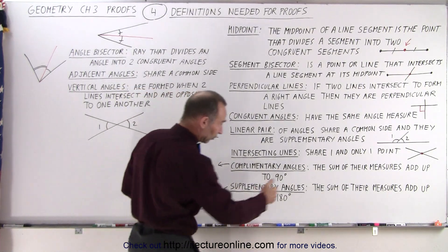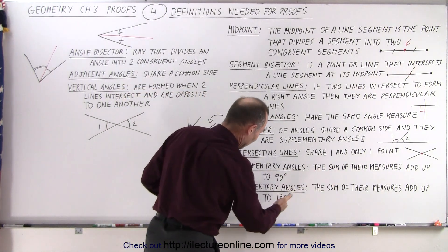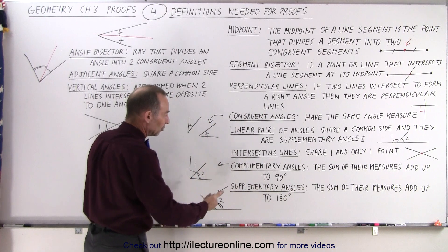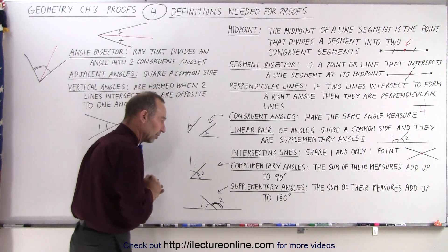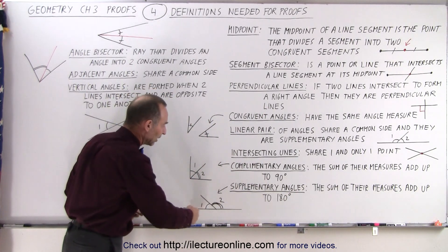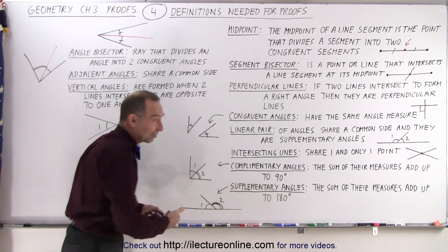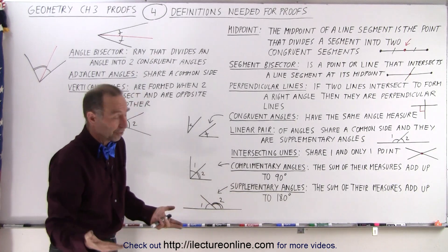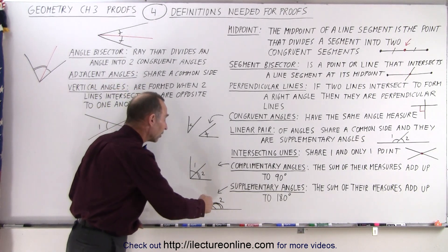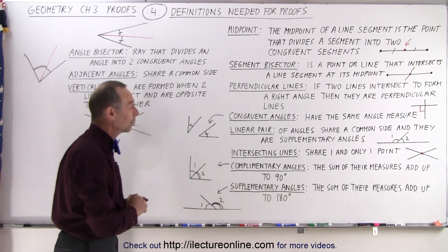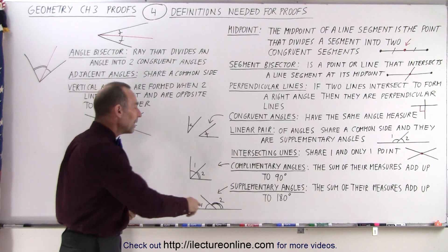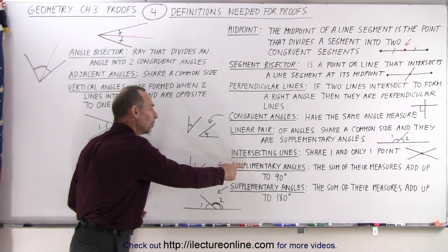And supplementary angles: the sum of their measures adds up to 180 degrees by definition — that's what supplementary angles are. Here you can see an example: they share a common side, so therefore they are adjacent, as well as their angle measures adding up to 180 degrees.